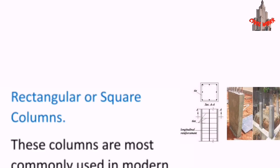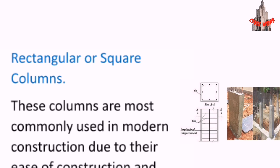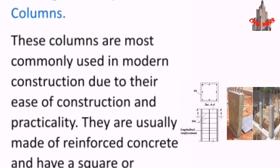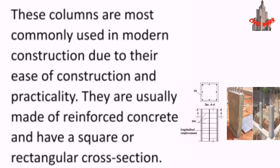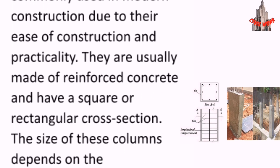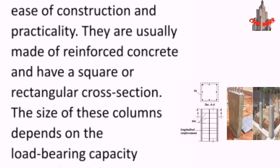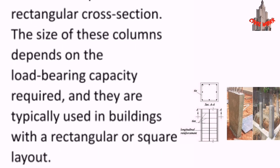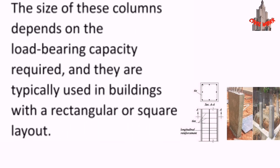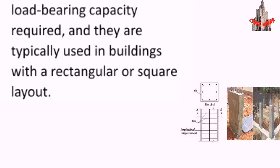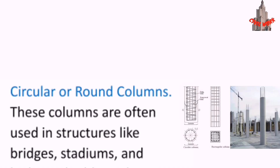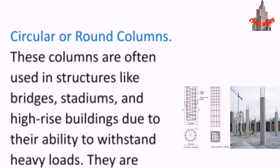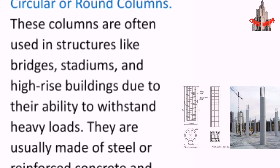As per shapes, columns can be broadly classified into the following types. Rectangular or square columns are the most commonly used in modern construction due to their ease of construction and practicality. They are usually made of reinforced concrete and have a square or rectangular cross section. The size depends on the load bearing capacity required, and they are typically used in buildings with a rectangular or square layout.